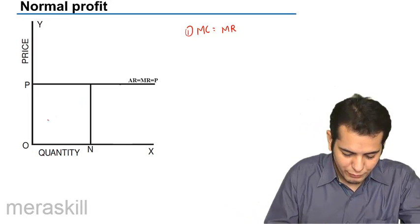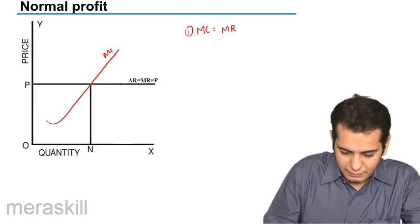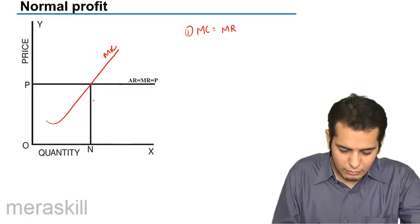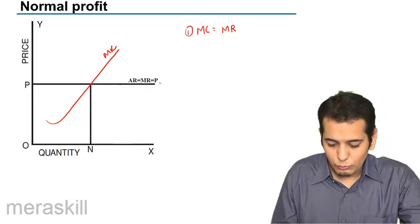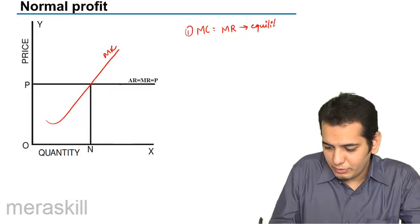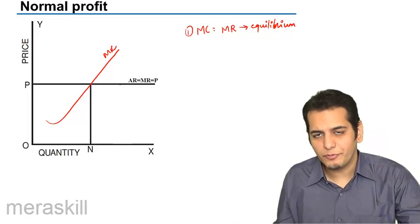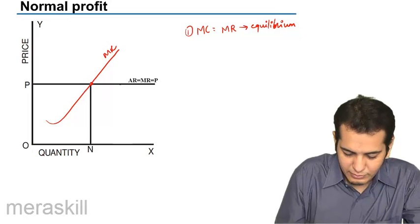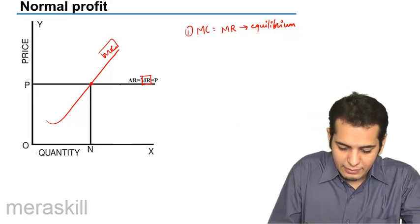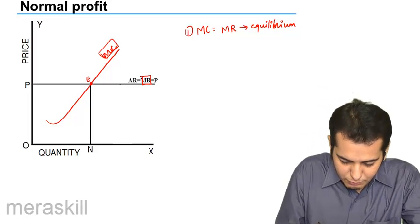Let me draw the MR curve for you again. So this is my MC curve. So where do you think will be the equilibrium? This condition will give me the point of equilibrium. The equilibrium is at this point because MR and MC are equal at this point. So let me name this point as E.